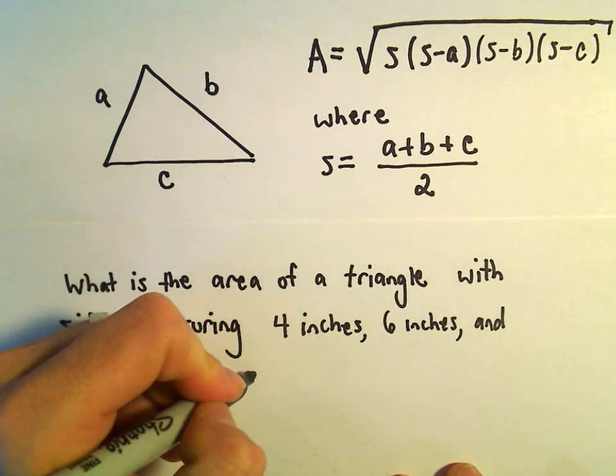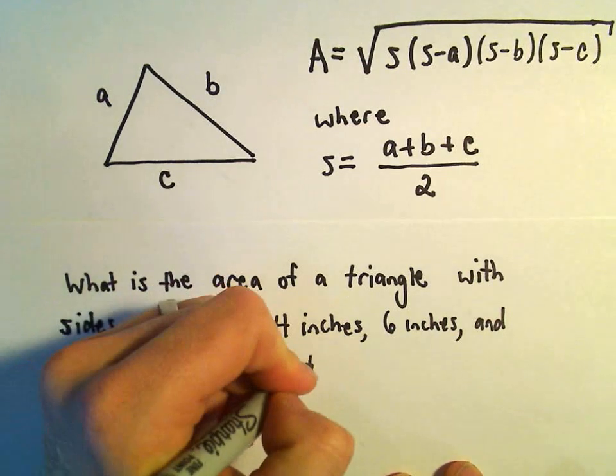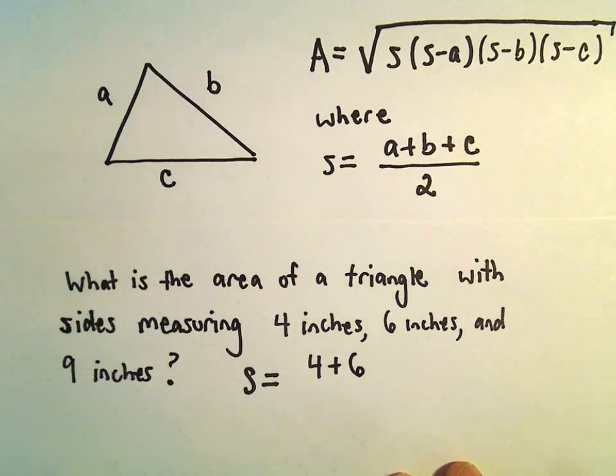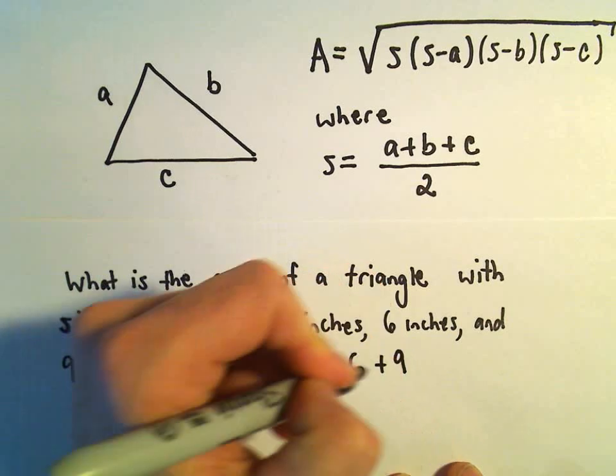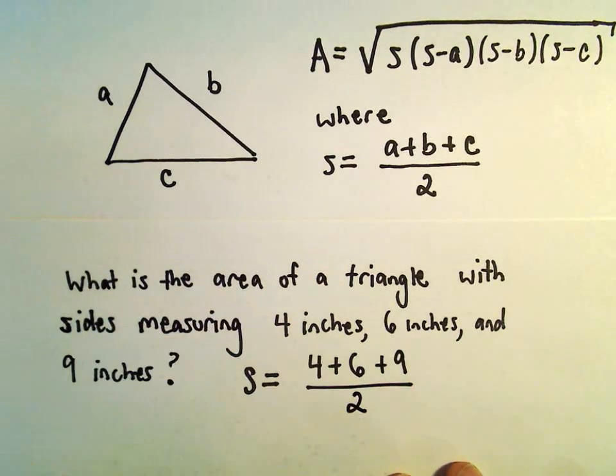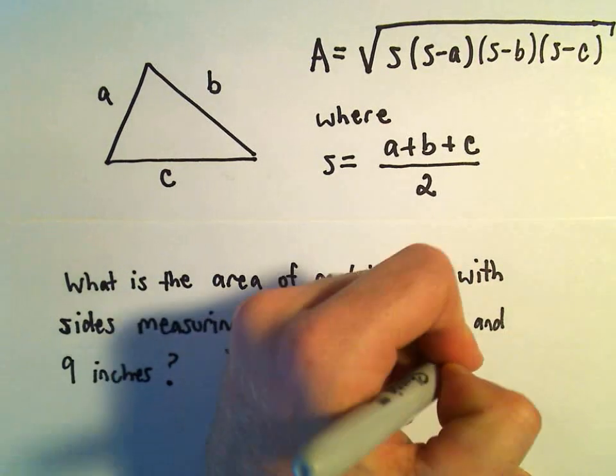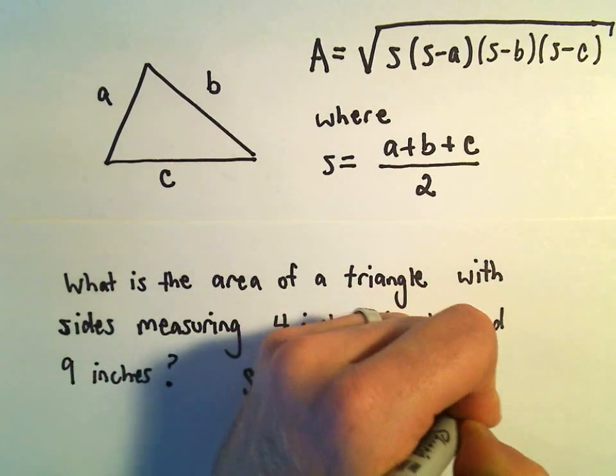Well, the first thing I would do would be to compute this semi-perimeter. So we'll take 4 plus 6 plus 9 and divide that by 2. Well, let's see, 4 plus 6 is 10, plus 9 would be 19 over 2. I think I'm just going to leave it as a fraction for the time being.